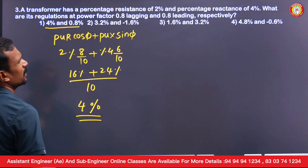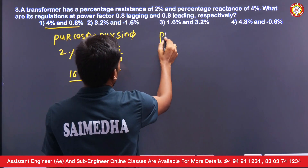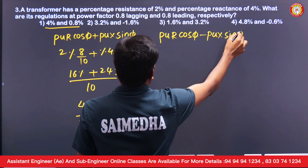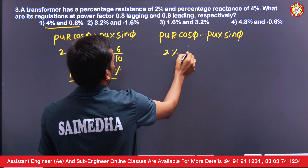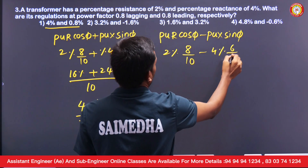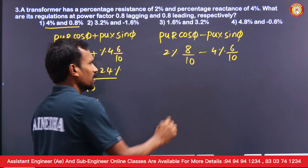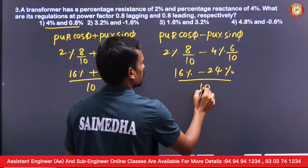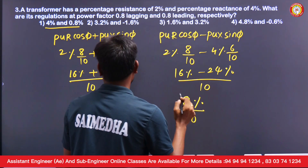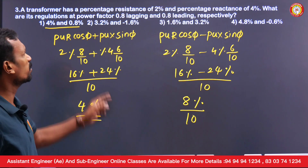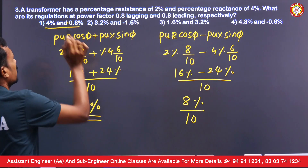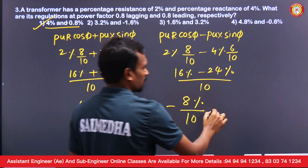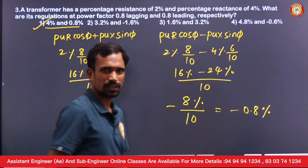For leading load: per unit R × cos φ − per unit X × sin φ = 2×0.8 − 4×0.6 = 16%/10 − 24%/10 = −8%/10 = −0.8%. The answer is −0.8% (negative). This is the answer to this question — very simple.